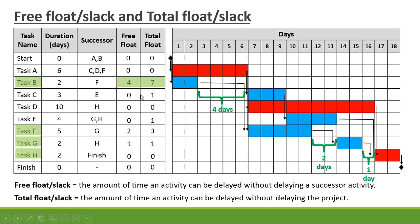Task B is also connected to F, F is connected to G, and G is connected to H. Task F has a float of 2 days, and G has a float of 1 day. So the total float is 1 plus 2 plus 4 equals 7 days — there is a 7-day total float on Task B.